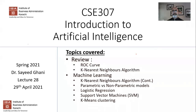Let's start with a review of the last lecture where we looked at the ROC curve and began looking at the k-nearest neighbors algorithm. We'll continue with that and discuss parametric versus non-parametric models, then look at examples of traditional algorithms such as decision trees and random forests. We'll also cover logistic regression, SVM support vector machines, and a clustering algorithm — fairly briefly, without going into too much technical discussion.